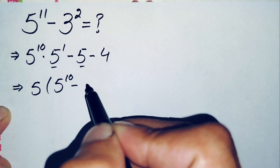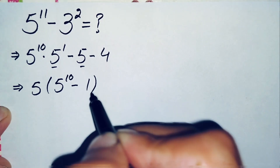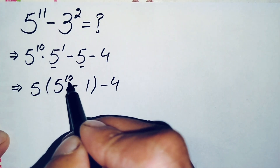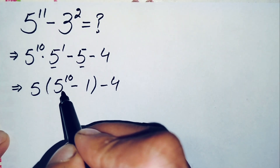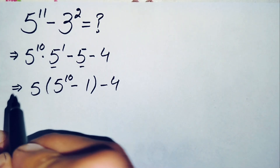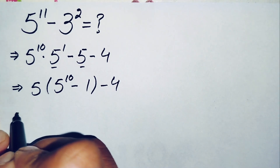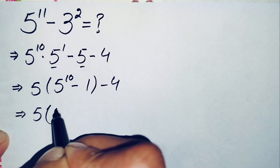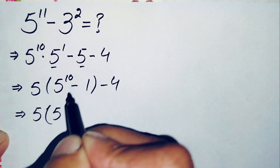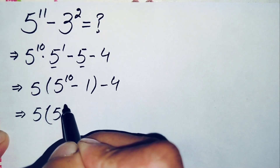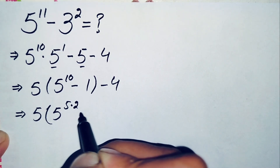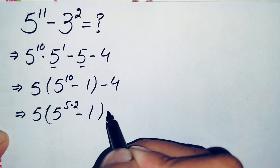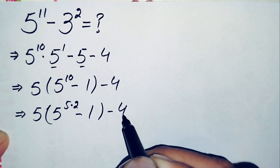Next we will factorize this power 10 as 5 times 2, so this will become 5 times 5 raised to power 5 times 2, minus 1, minus 4.